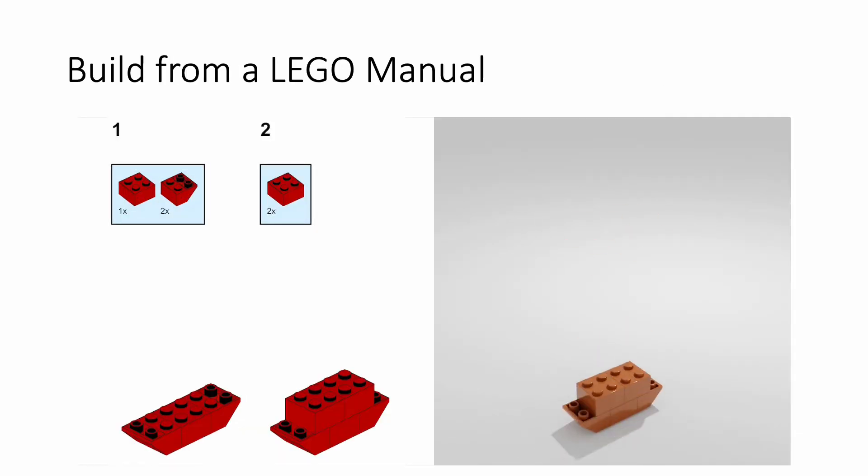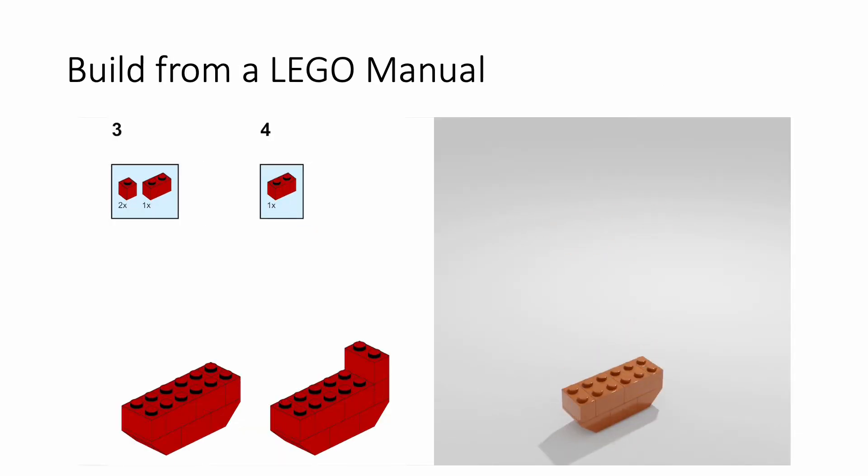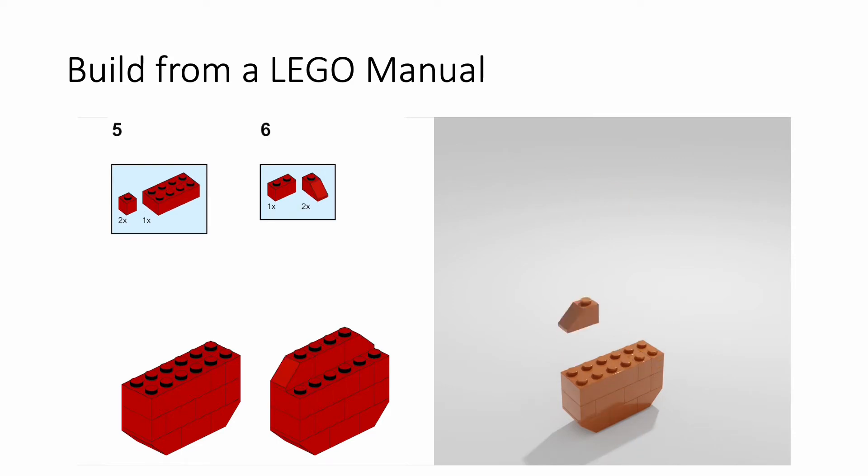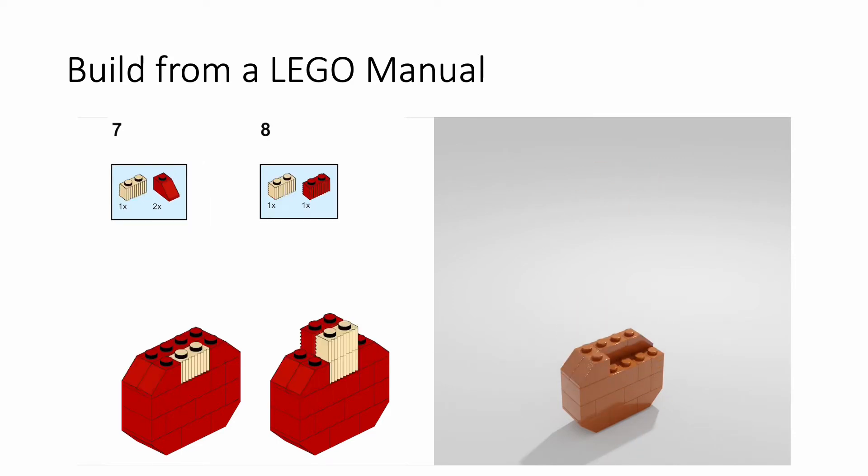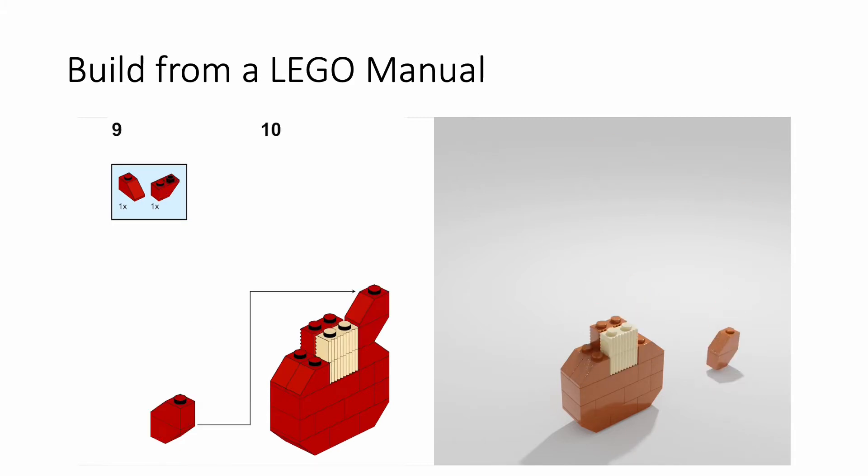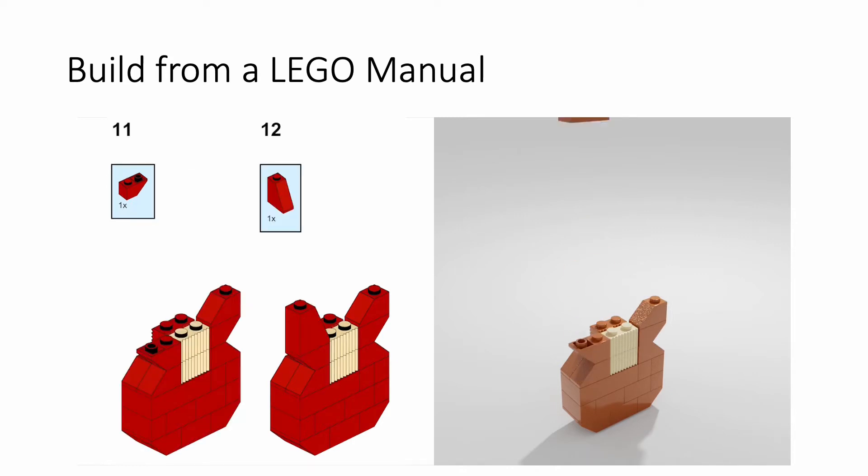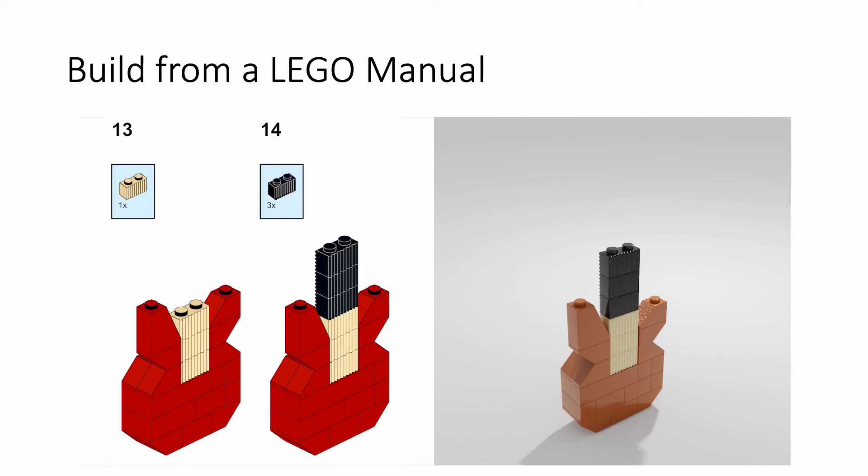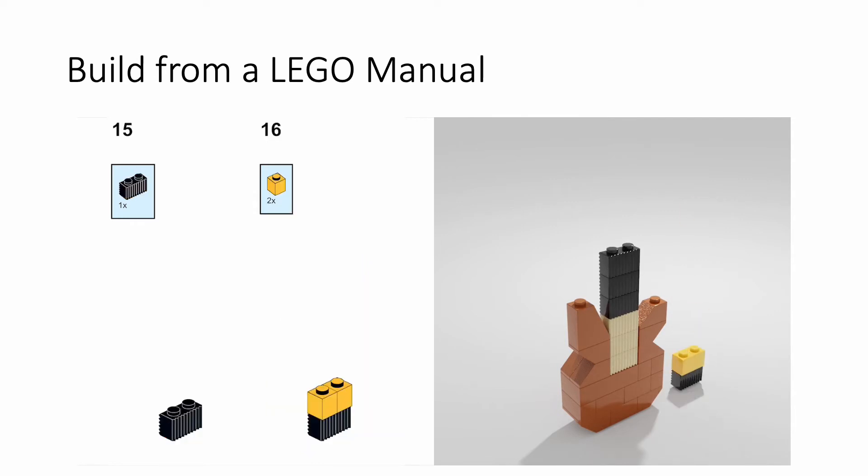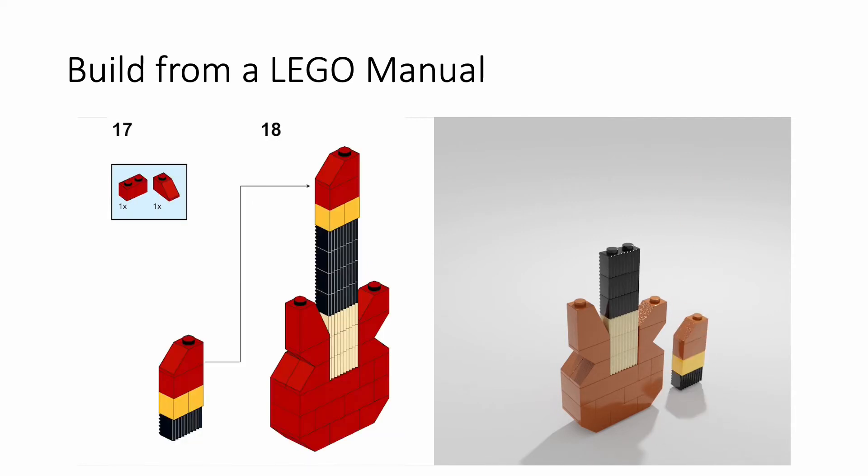This video shows how a guitar is built according to the step-by-step instruction of the manual. In each step, we infer the location of components from the manual image and the 3D object we have already built. In the last step, we can see a sub-module is first built from scratch and then added to the main body as a whole.